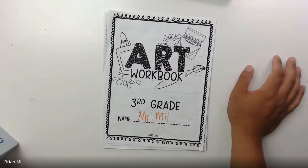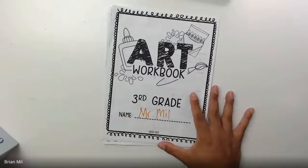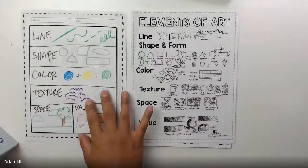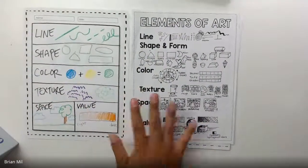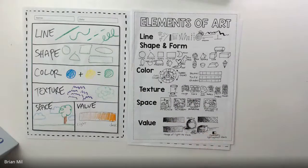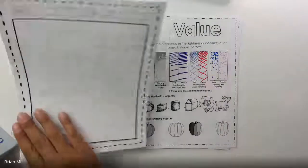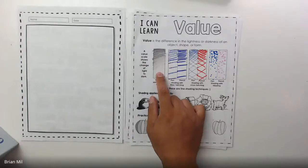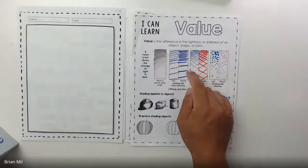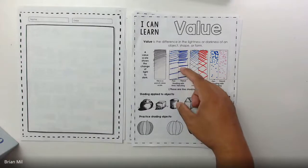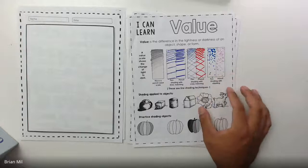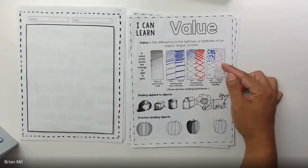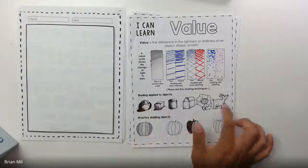We're gonna get started right away. This is our workbook — let's talk about what we've done so far. We did the first page, which was going over the seven elements of art, which were pretty basic, and then we're going over each one individually. We talked about value — how you can shade with blending, hatching using straight lines, cross-hatching, and stippling, which is my favorite — creating shading with just dots. We have a couple of examples below.